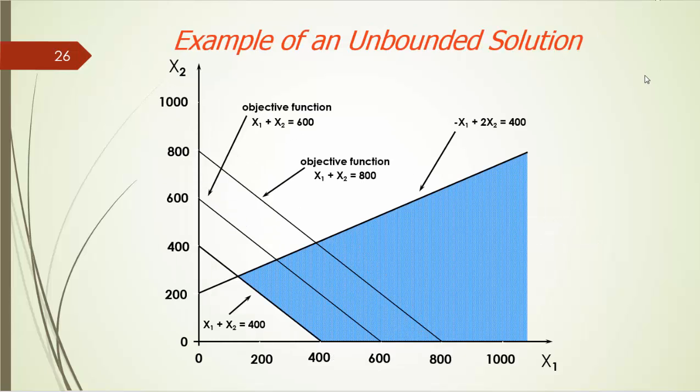Unbounded solution is the situation in which the feasible region is unbounded, going all the way to infinity. In the maximization problem, unbounded feasible region will result in unbounded solution.